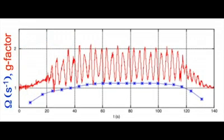The accelerometer data show that the g-factor varies between 1 and 2. This means that the experience of your body varies as you ride between feeling your normal weight and feeling twice as heavy.